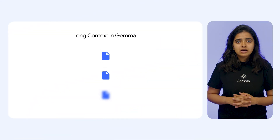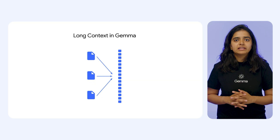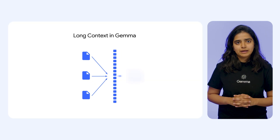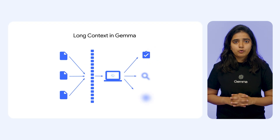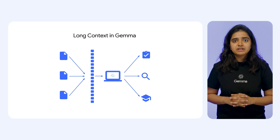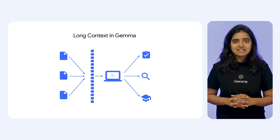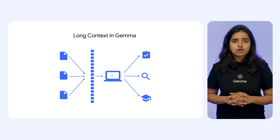The context length of a model refers to the maximum amount of information or tokens that it can coherently process at one time. This includes the information you provide, which essentially becomes the model's immediate knowledge base. Large language models, or LLMs, are typically trained to support a specific maximum context length. Exceeding this limit often leads to a decline in performance — the model might forget earlier parts of the input or generate less relevant responses.